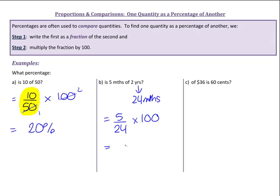Now I wouldn't be doing this by hand. I'd go straight to my calculator and go 5 divided by 24 times by 100 and I get, it's an approximate answer, approximately 20.83%.